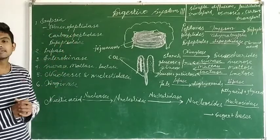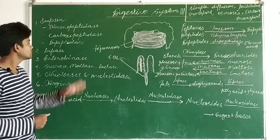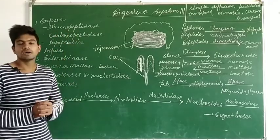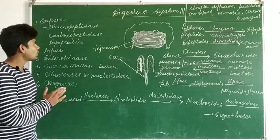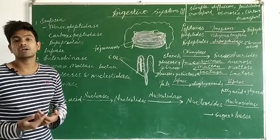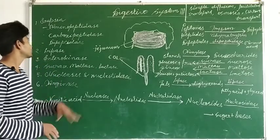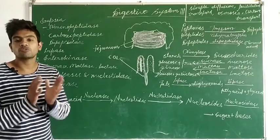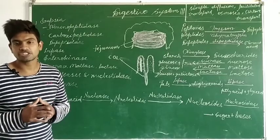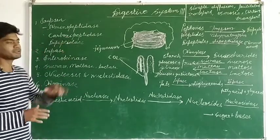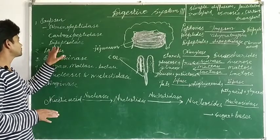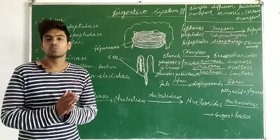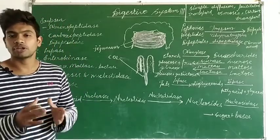The first is aminopeptidase, second is carboxypeptidase, and third is dipeptidase. Aminopeptidase breaks down peptones and peptides and converts them into amino acids. Carboxypeptidase also performs the same function — it breaks down peptones and peptides into amino acids. Dipeptidase is an enzyme which breaks down dipeptides and converts them into amino acids.